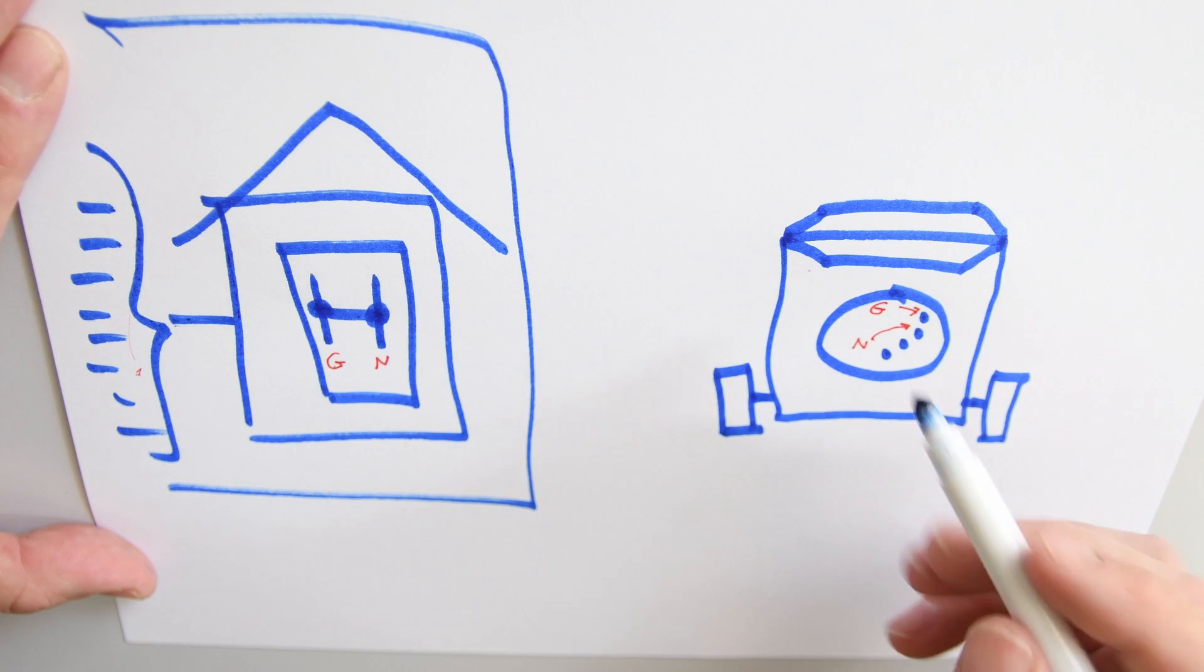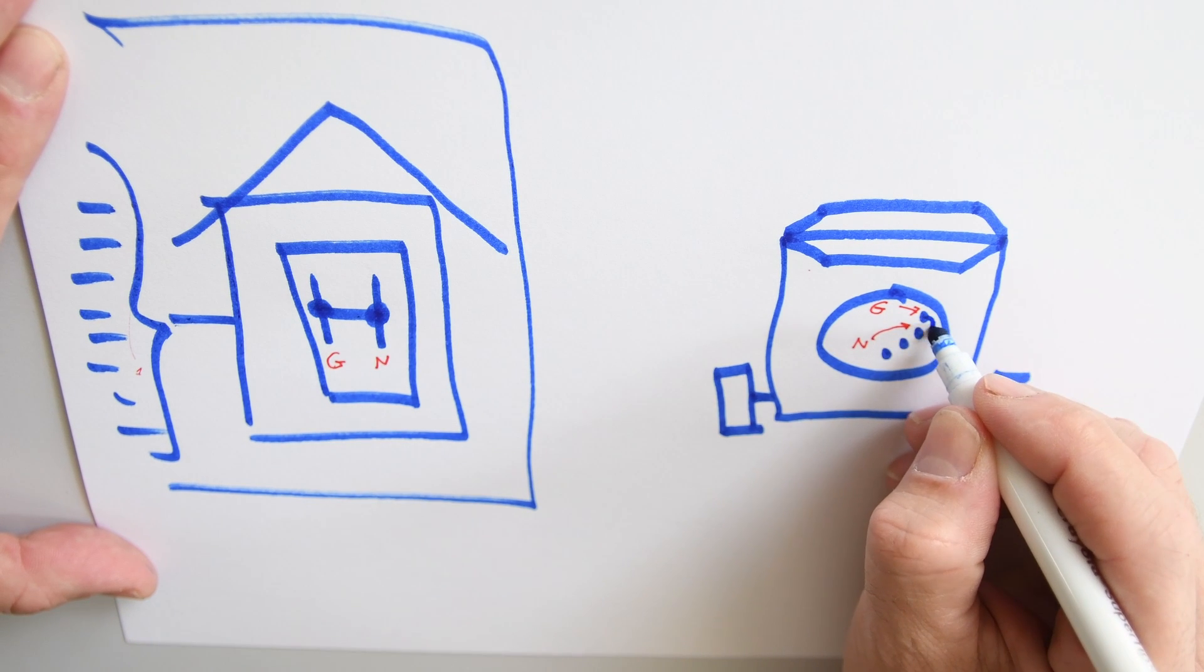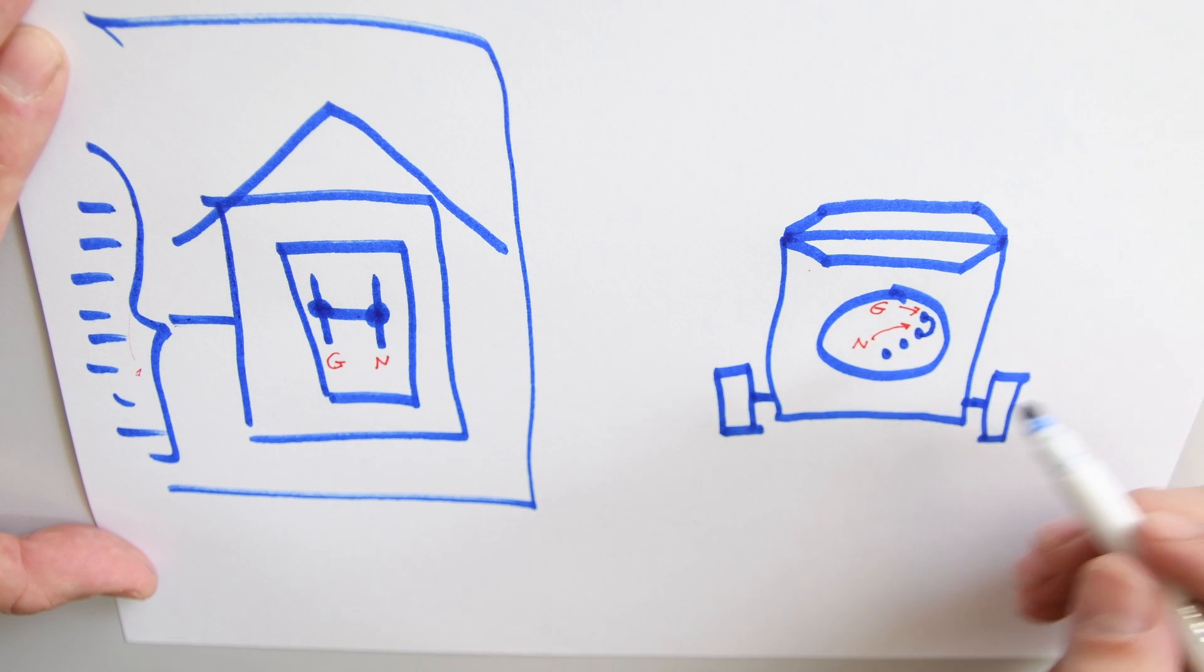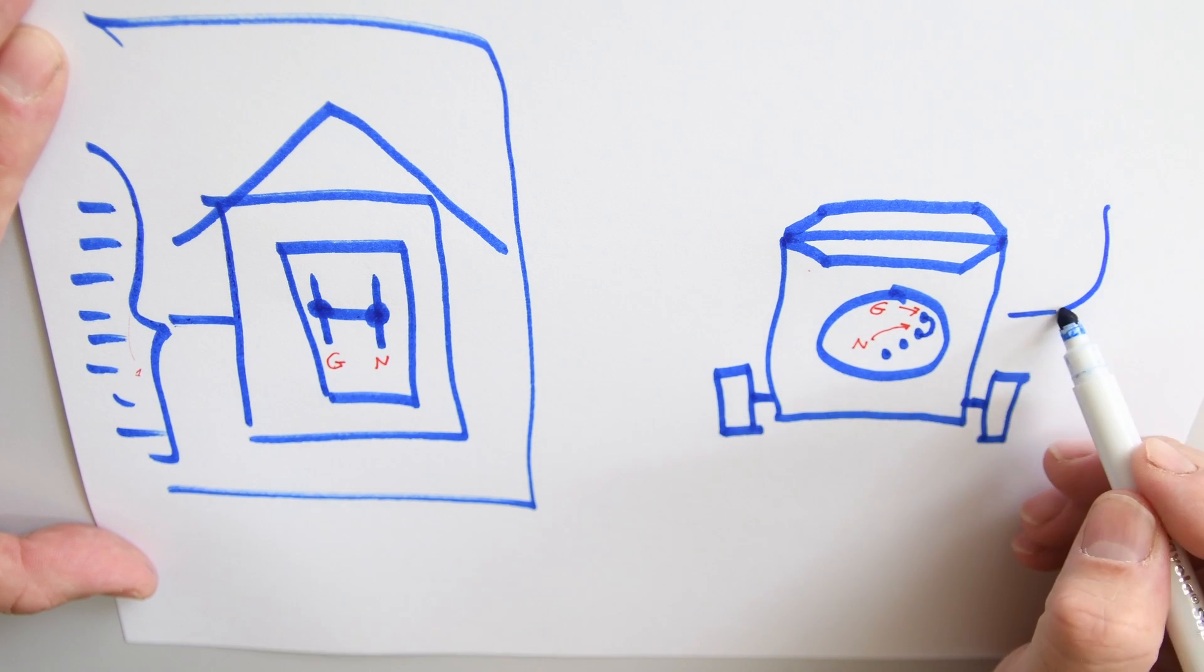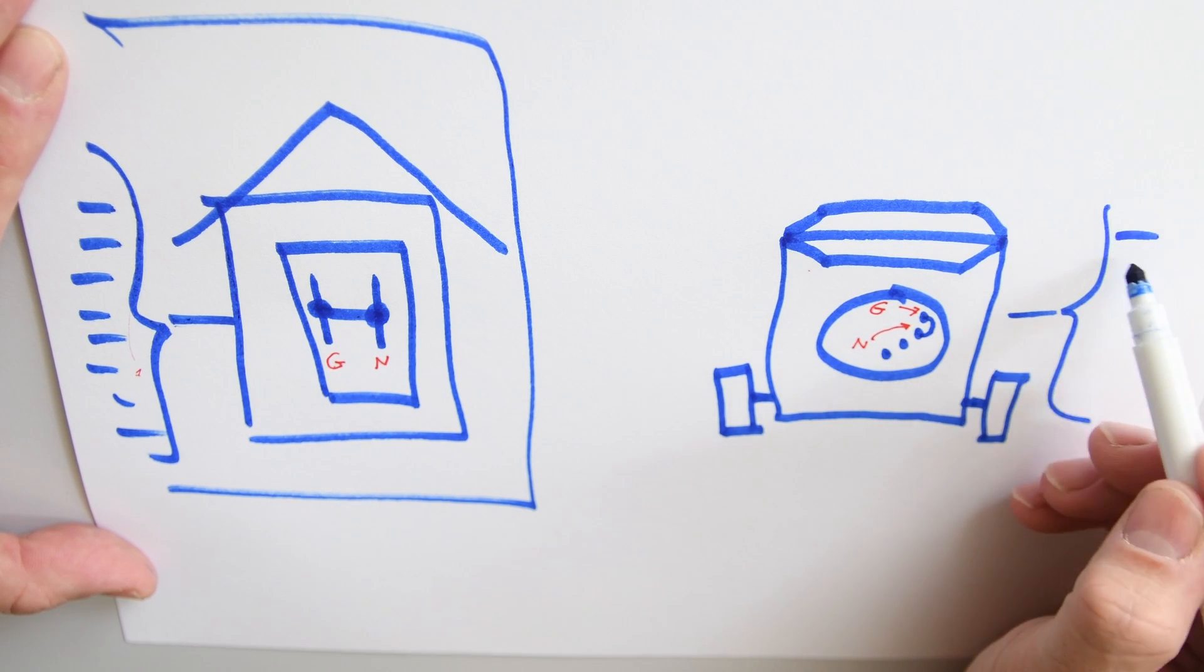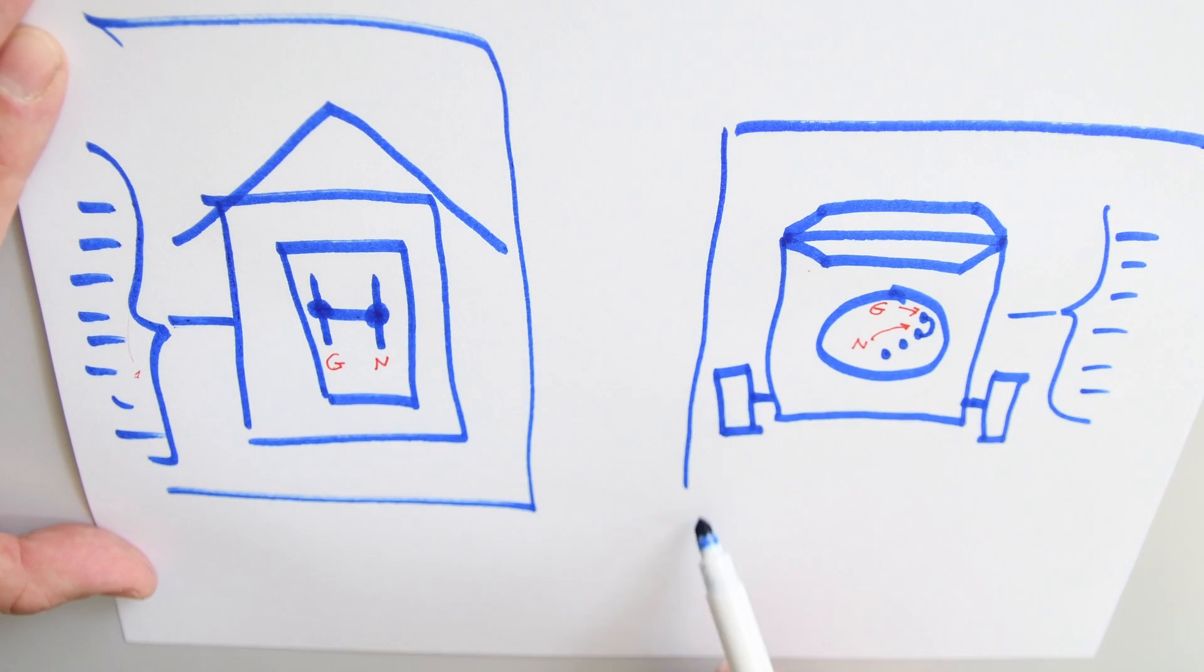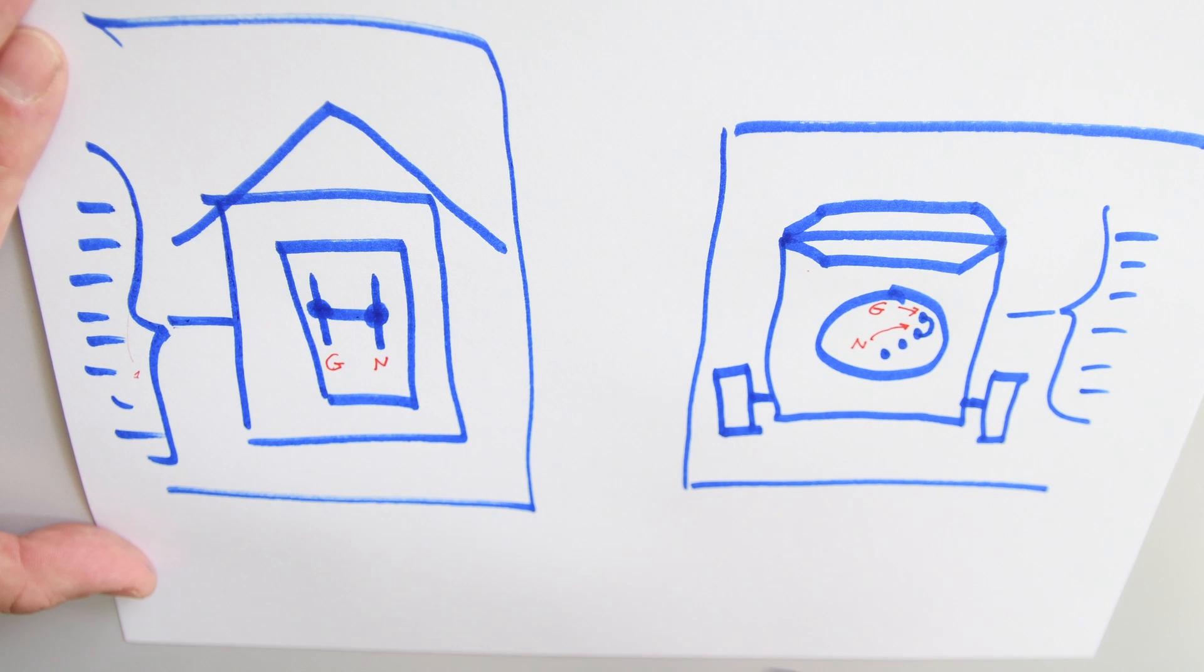So you can see when you open this cover that the ground is reached to the neutral. That means that anything that we connect to the generator, any power tools, whatever, in this system there's going to be only one place where the ground is bonded to the neutral. It's not going to happen on any of these tools. It's going to happen only on the generator. So this is compliant to the National Electrical Code.